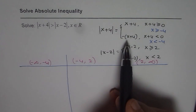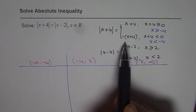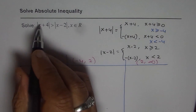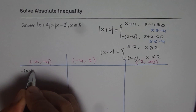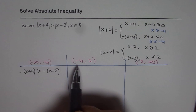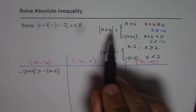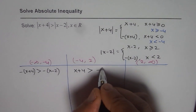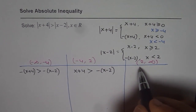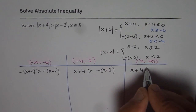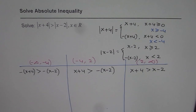For the interval minus infinity to minus 4, both expressions are negative, so we replace the inequality with negative of x plus 4 greater than negative of x minus 2. For the interval between minus 4 and 2, x plus 4 is positive but x minus 2 is negative, giving x plus 4 greater than negative of x minus 2. For x greater than 2, both are positive, so we write x plus 4 greater than x minus 2.